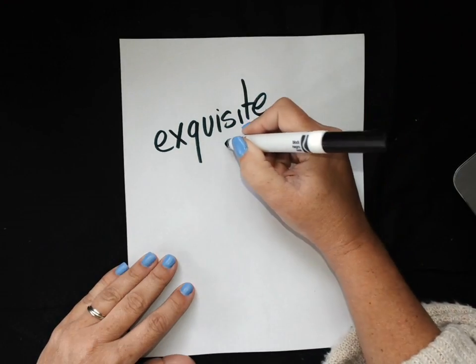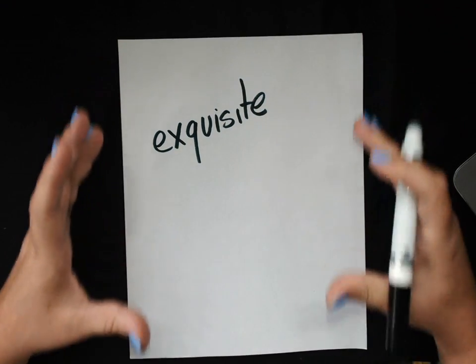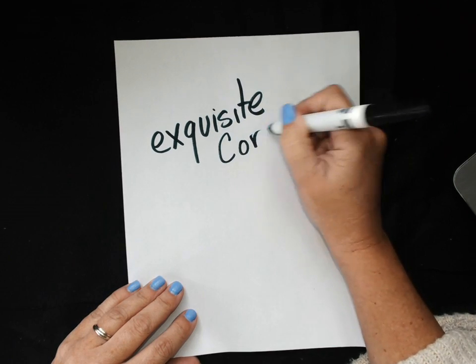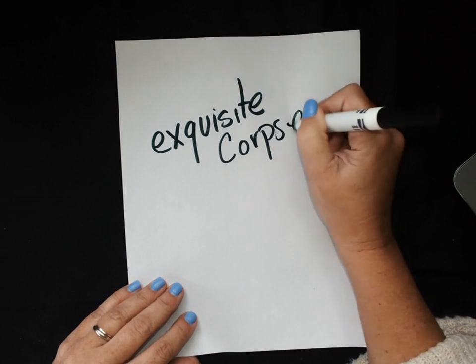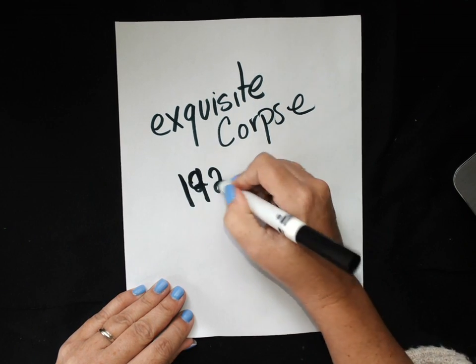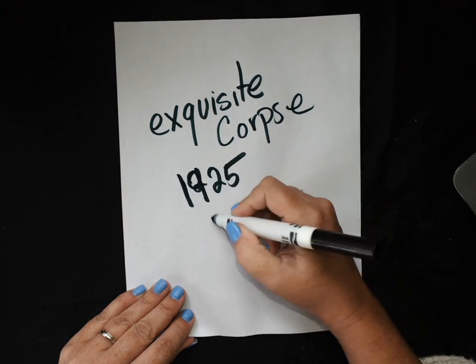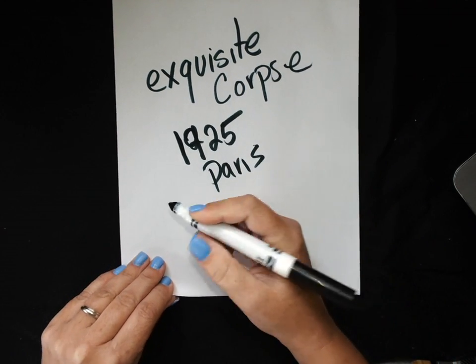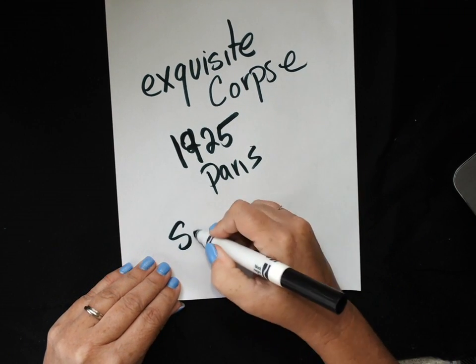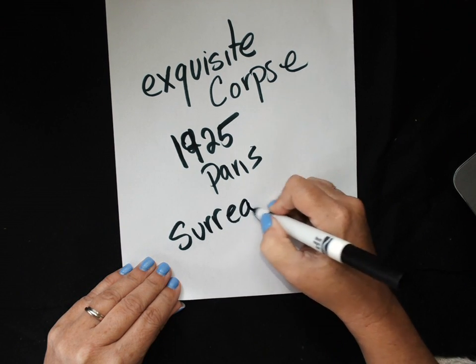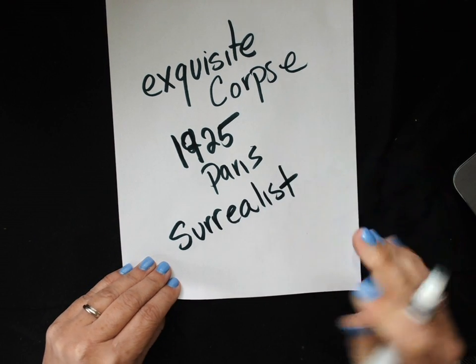It's a creature that you're going to create and it's going to have three different parts. And when you put them all together it can be really funny. So it was invented in 1925 in Paris by a group of artists that were surrealists. So their artwork is very dreamlike and they invented this game.